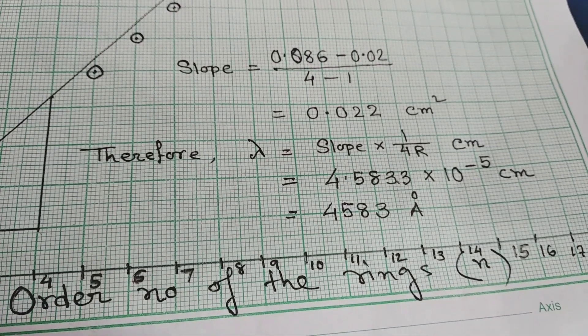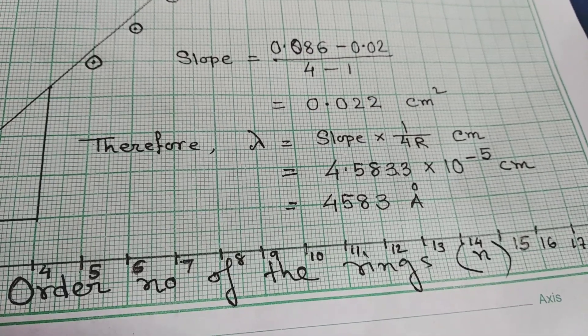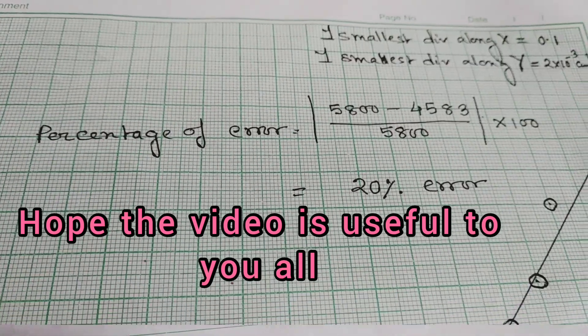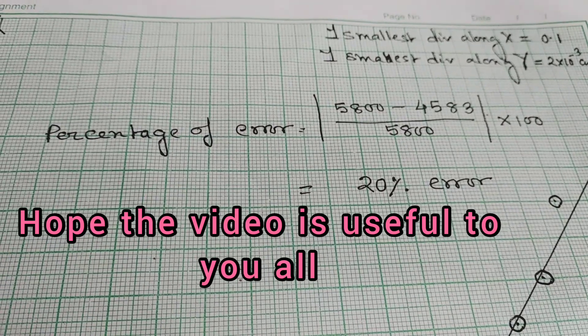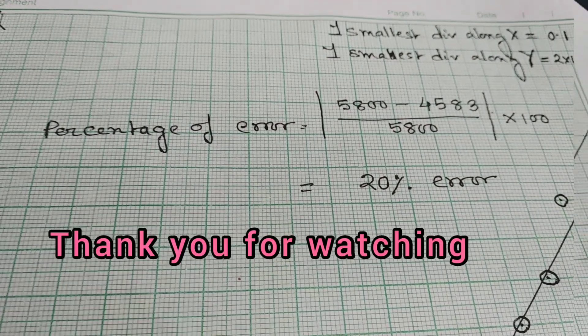Now, original value is 5,800 angstrom. From the formula, we got 20% error. This is the end.